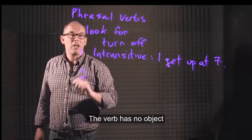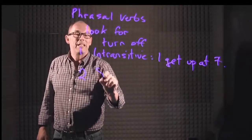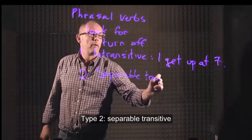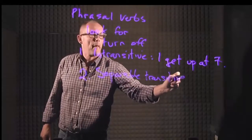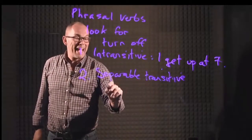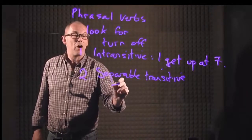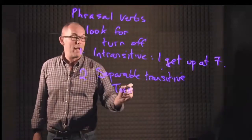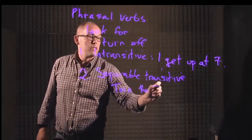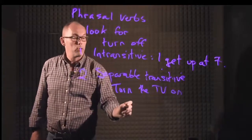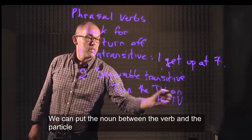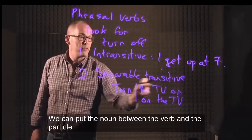The second type is the separable transitive verb. This type can be separated in the sense that I can move the noun around: 'turn the TV on' or 'turn on the TV.' Notice it doesn't make any difference to the meaning of the sentence.